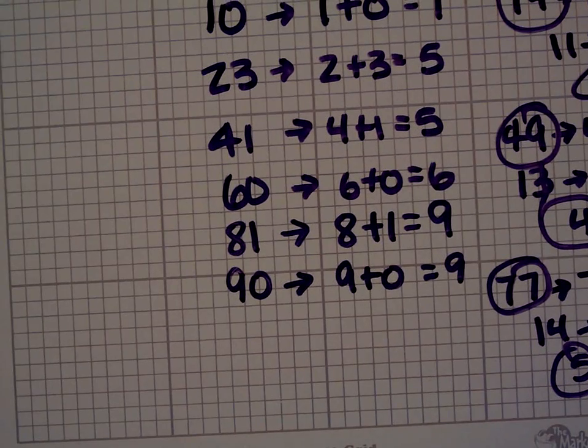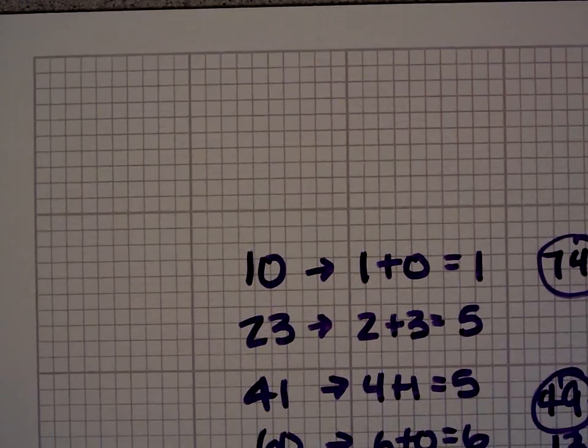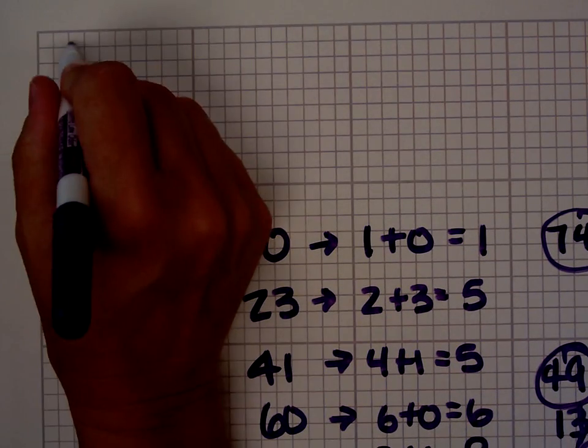This pattern holds true. This method of finding the digital root holds true no matter how big your numbers are. If we wanted to find the digital root of 1959,